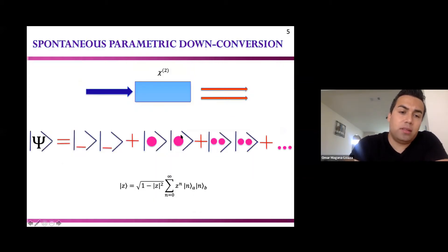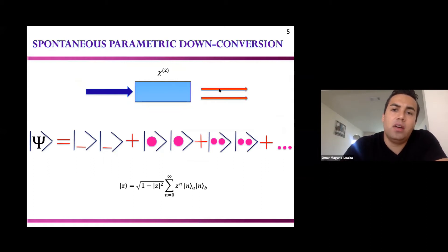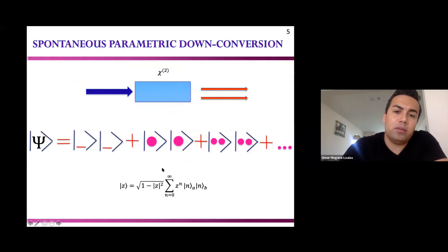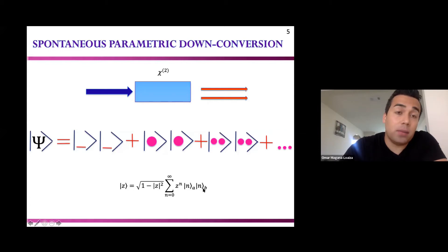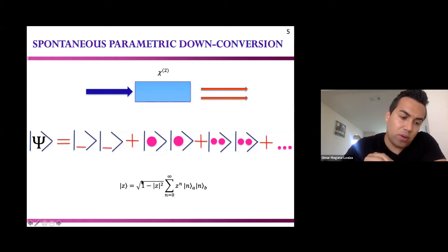We start with two modes in vacuum states, produced by pumping a nonlinear crystal through spontaneous parametric down conversion. Most of the time, if we measure this state, we find it in a vacuum state, but sometimes we generate two, four, or six photons. Mathematically, this superposition can be described with the squeezing parameter C, which describes the brightness of the source, and N, the number of photons in each mode. This is an entangled state, and it is the state we modify to generate the multiphoton states I will describe now.